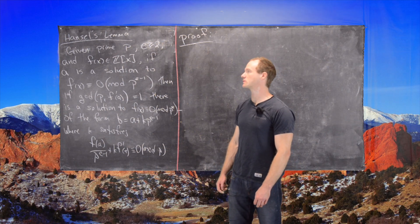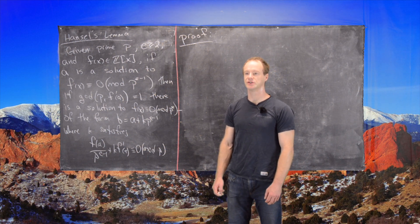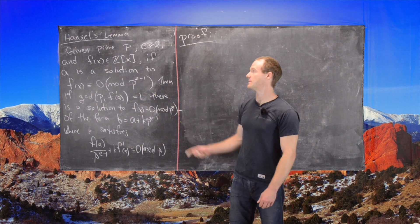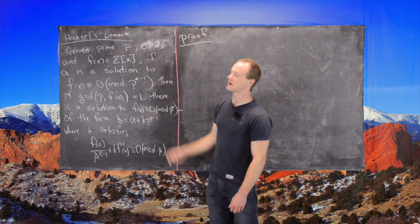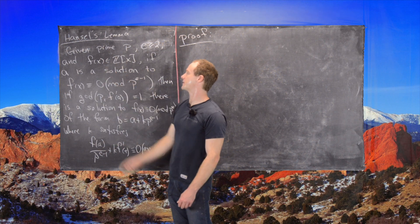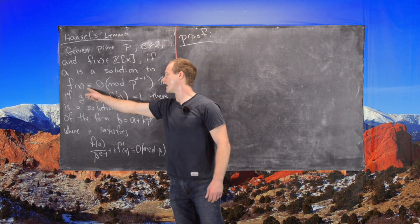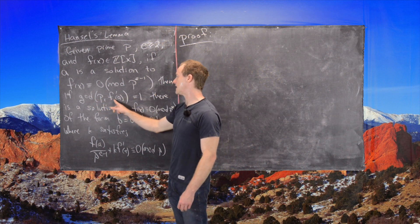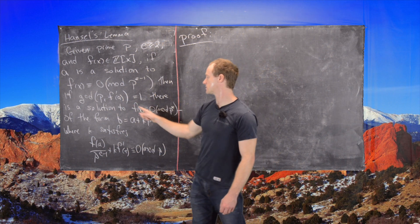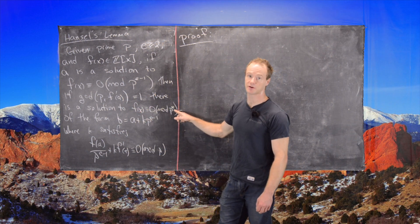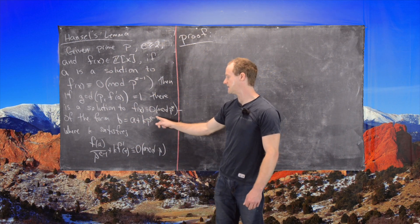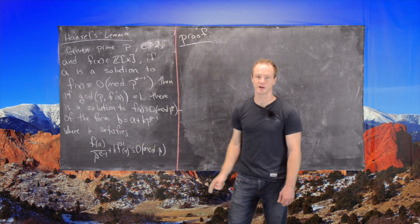Here we're looking at a fairly technical result that allows us to take solutions to polynomial congruences mod p and boost them to solutions to polynomial congruences mod powers of p. Given a prime p, some number e ≥ 2, and a polynomial with integer coefficients, if a is a solution to f(x) ≡ 0 mod p^(e-1), and if gcd(p, f'(a)) = 1, there is a solution to f(x) ≡ 0 mod p^e of the form b = a + k·p^(e-1), where k satisfies a congruence.